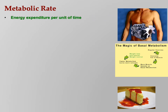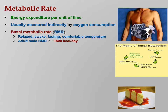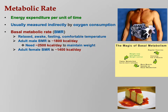Metabolic rate is energy expenditure per unit of time. Usually you can't actually measure ATPs directly, so you measure how much oxygen people are using, since you need oxygen to make ATPs. Your basal metabolic rate, your BMR, is measured when you're relaxed, awake, and fasting at a comfortable temperature — in other words, how much energy does your body need just to maintain itself? For an adult male, that's about 1,800 kilocalories per day, and you need about 2,500 to maintain weight. For females, about 1,400 kcal for BMR and 2,000 to maintain weight.